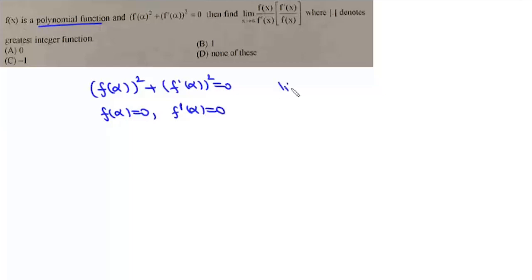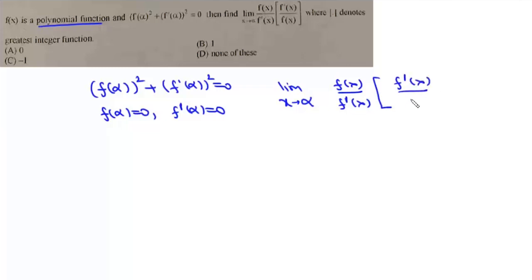This third question: f(x) is a polynomial function such that f(α)² + f'(α)² = 0. Assuming it is a polynomial with real coefficients, we can say f(α) must be zero and f'(α) must also be zero. We need to find the limit as x tends to α of f(x)/f'(x) multiplied by the greatest integer function of f'(x)/f(x).